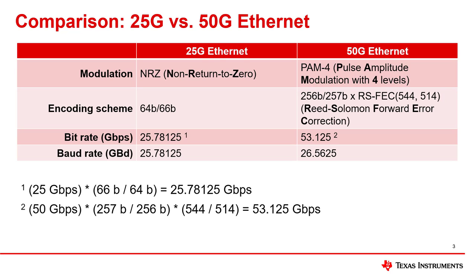50 gigabit Ethernet uses a combination of two different encoding schemes. 256B/257B encoding improves on 64B/66B encoding and only adds one bit per each 256-bit word. Reed-Solomon Forward Error Correction, or RSFEC, adds 30 bits of overhead per each 514-bit word. The addition of these encoding overheads increases the original data rate of 50 gigabits per second to 53.125 gigabits per second. Since 50 gig Ethernet uses PAM4 modulation, the baud rate is one-half the bit rate, or 26.5625 gigabaud.